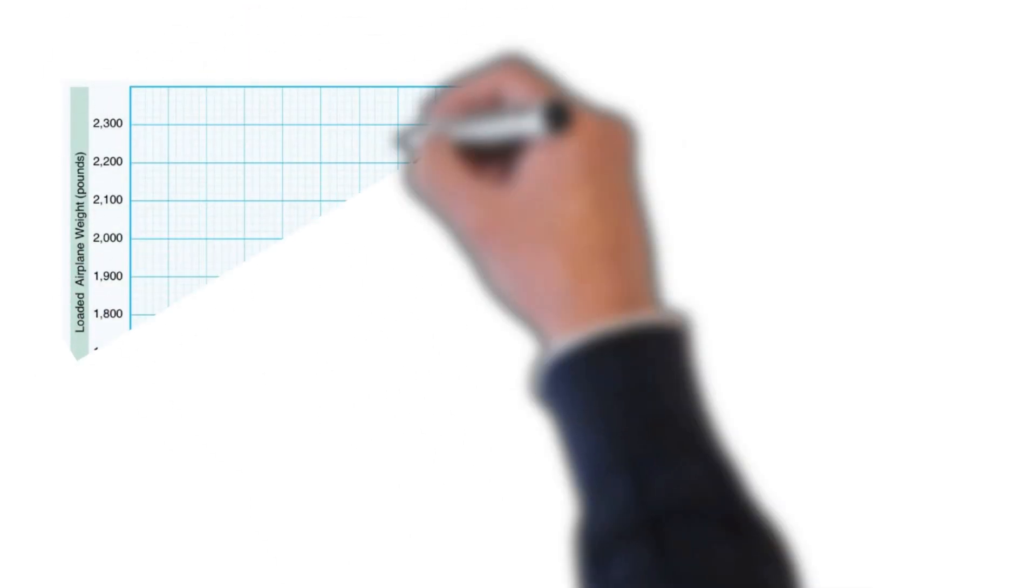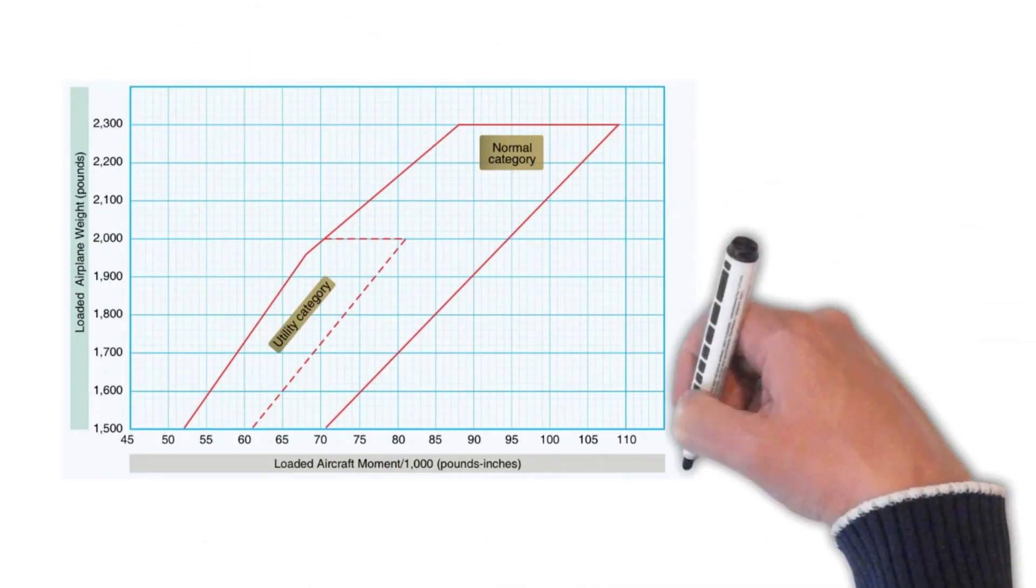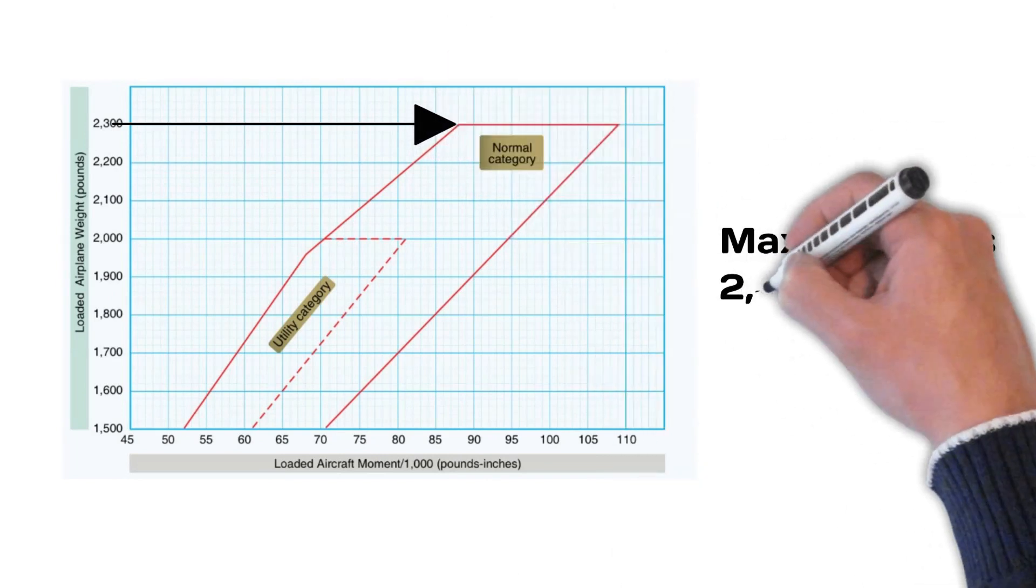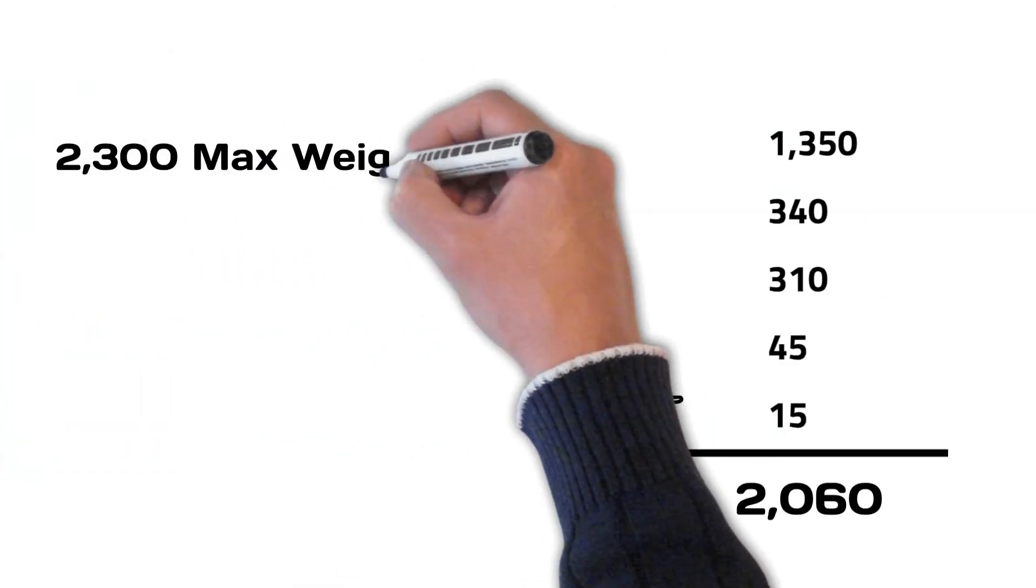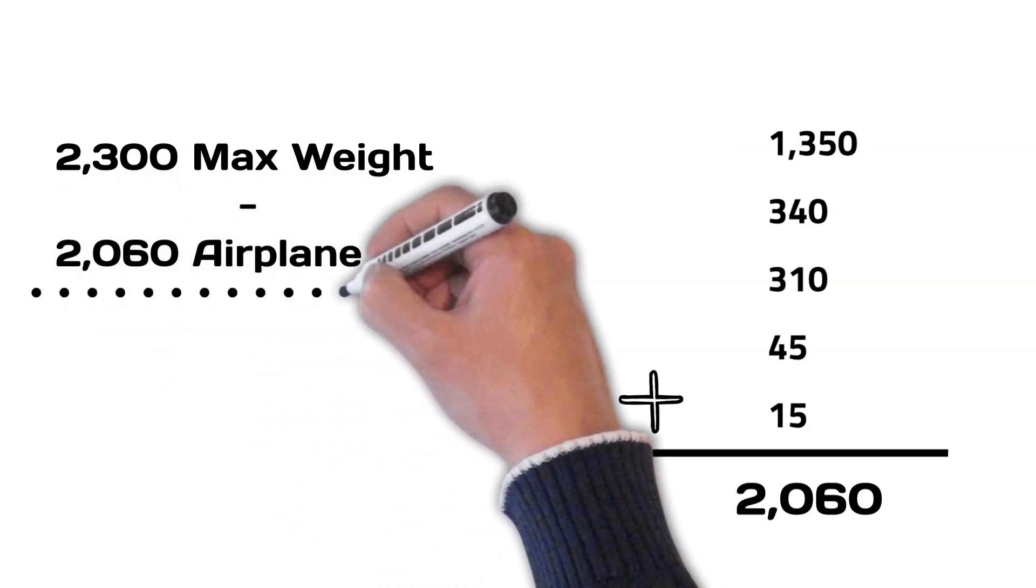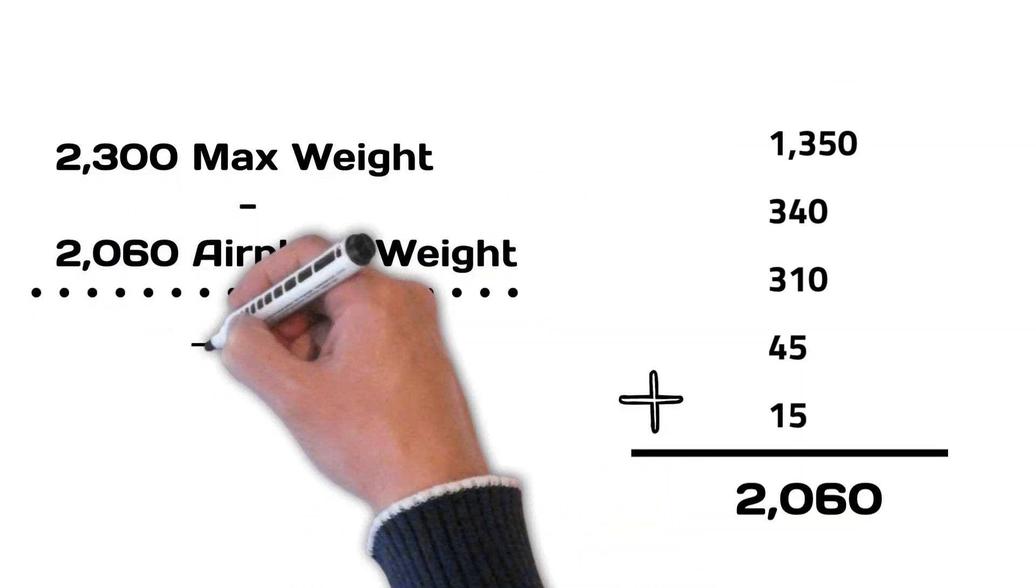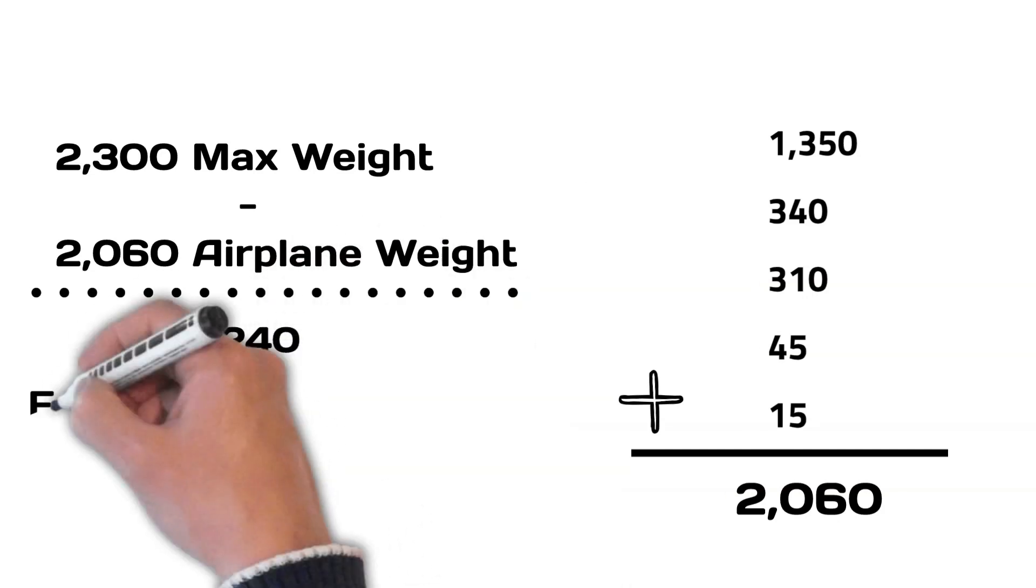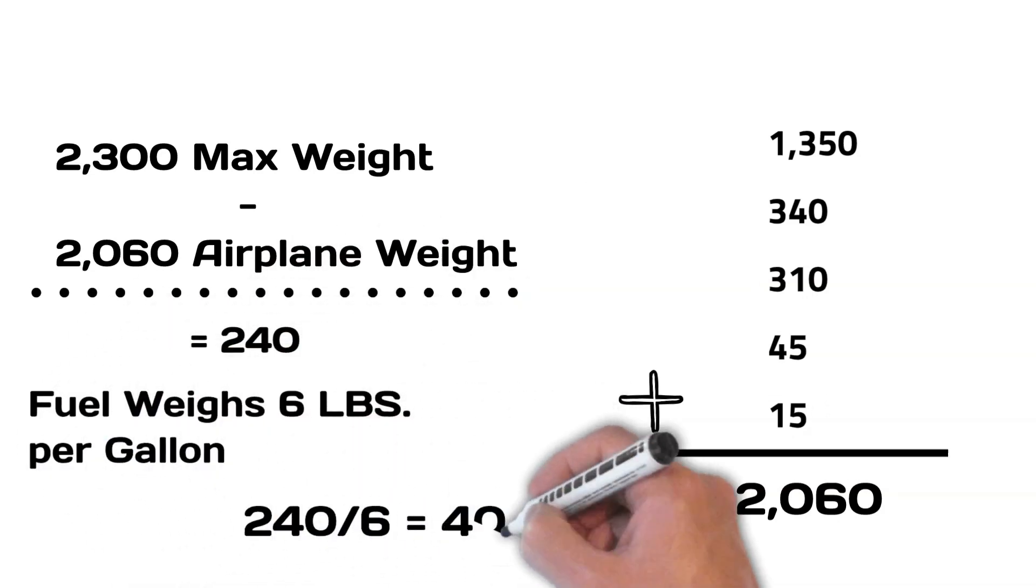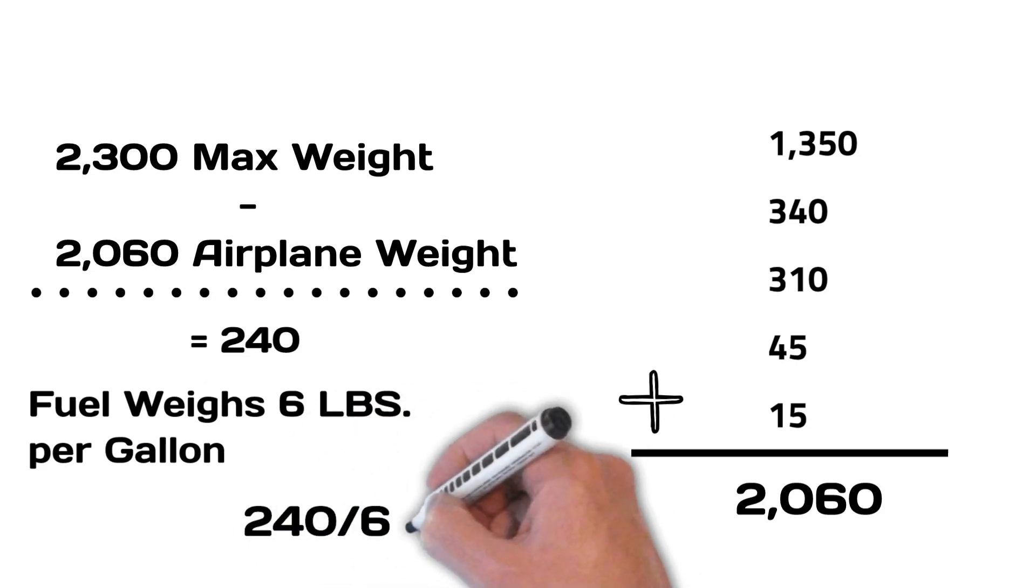Next, we can see from the weight table that the max allowable weight is 2,300 as illustrated by the arrow in the chart. We then need to subtract the weight of the airplane from the max weight allowable to find how much weight capacity is left for extra fuel.